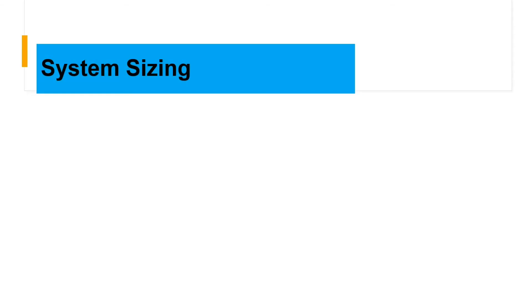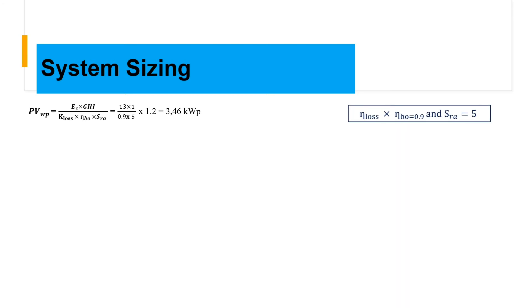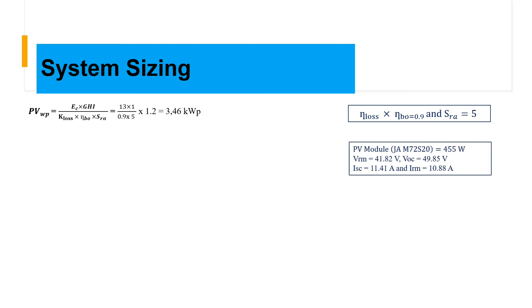Now let's size our system. For PV array sizing, we have an energy consumption of 13 kilowatt-hours, solar irradiation of 1 kilowatt-hour per meter square, losses, and solar radiation. The combination of all losses equals 0.9, and we have a solar radiation of 5 hours. This gives us a sized system of 3.46 kilowatt-peak, using a JAM72 S20 module.